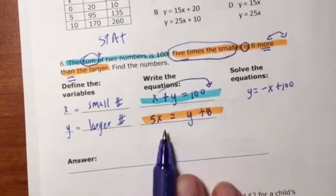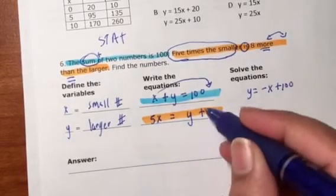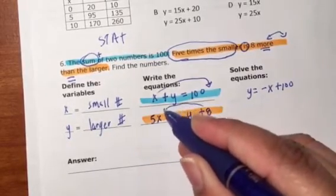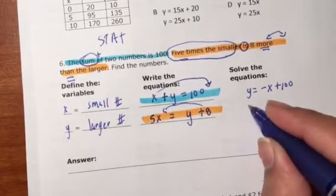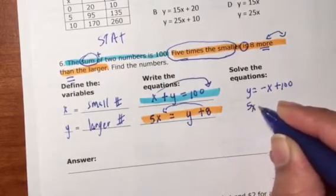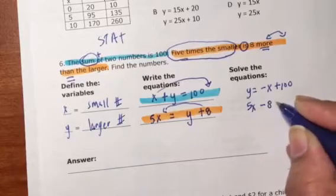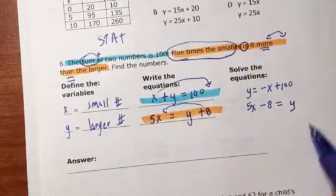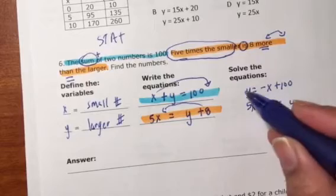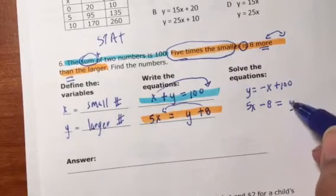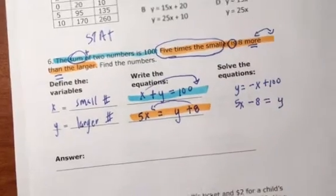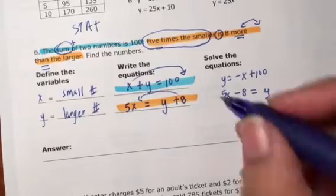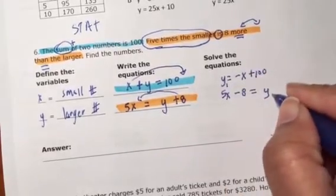And here, instead of moving the X, we're going to move this eight. When the eight comes over, it's 5X minus eight equals Y. Now you'll see that they both say Y equals. This just happens to be Y equals a little bit backwards.